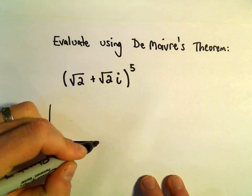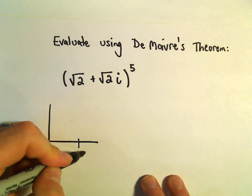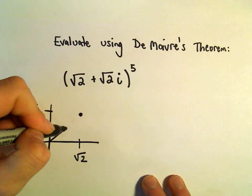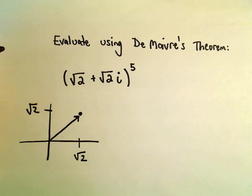So the first thing I'm going to do is graph my number. So we go over √2, you go up √2, that would be our complex number, √2 + √2i.